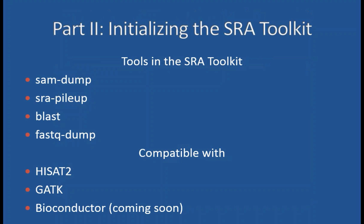Some of the advantages of this approach is that there are lots of tools in the SRA toolkit. You can dump SAMs, but you can also get pileups automatically, and you can get pileups over a range of SRA accessions from either dbGaP or public SRA. If your toolkit is initialized properly, you can use HISAT2 directly with SRA accessions, GATK directly with SRA accessions, and very soon you will be able to use Bioconductor directly with SRA accessions.